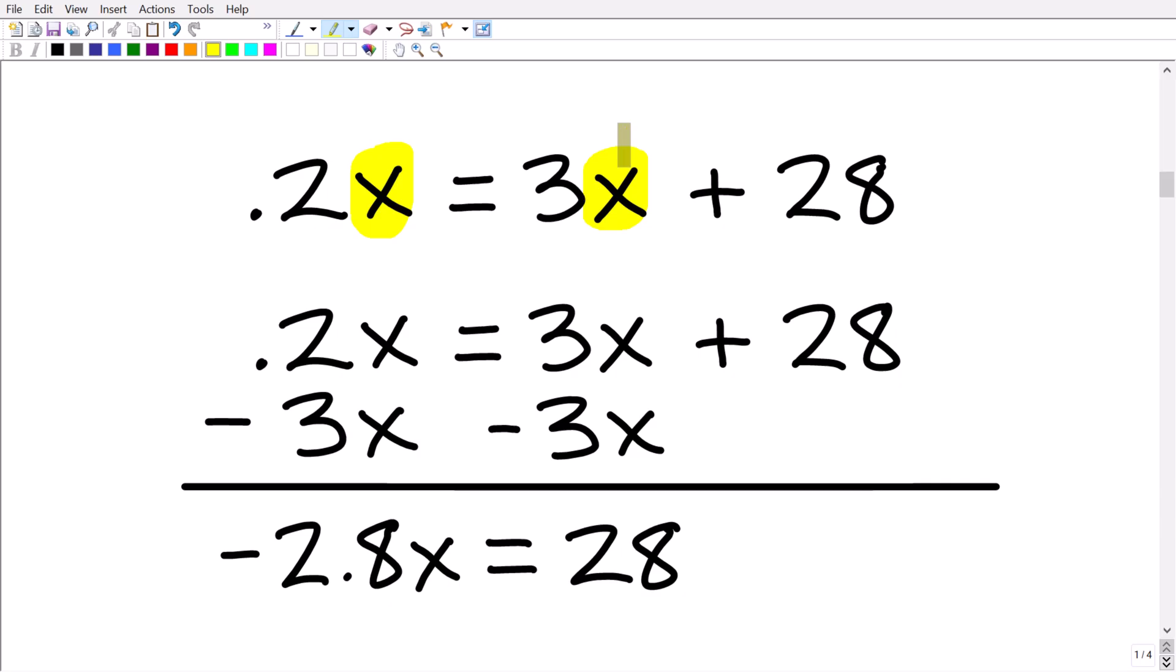Okay, so what we're going to do is move this 3x over to the left-hand side. Remember in algebra, we like to have our variables to the left and our numbers to the right. So we have to combine like terms. So what we're going to do is subtract 3x from both sides of the equation. Okay, and then we're going to add down. And if you need a calculator, that's perfectly fine. So we have 0.2x minus 3x. That's going to give us a negative 2.8x.